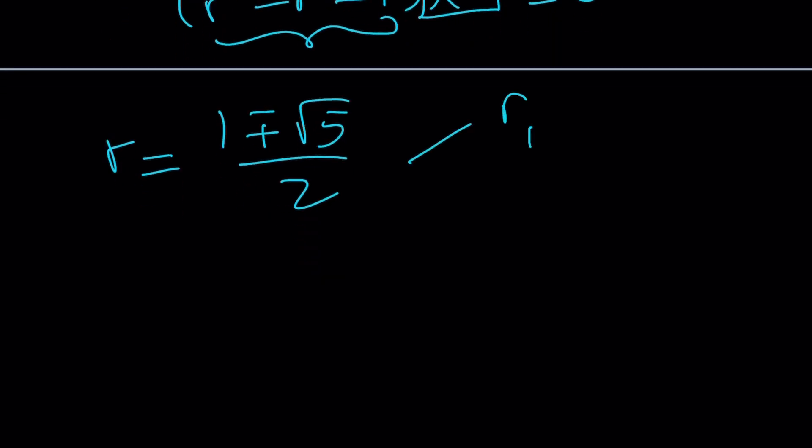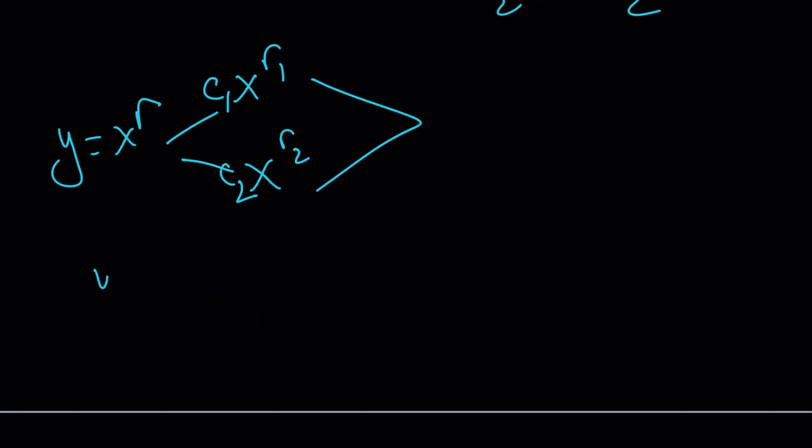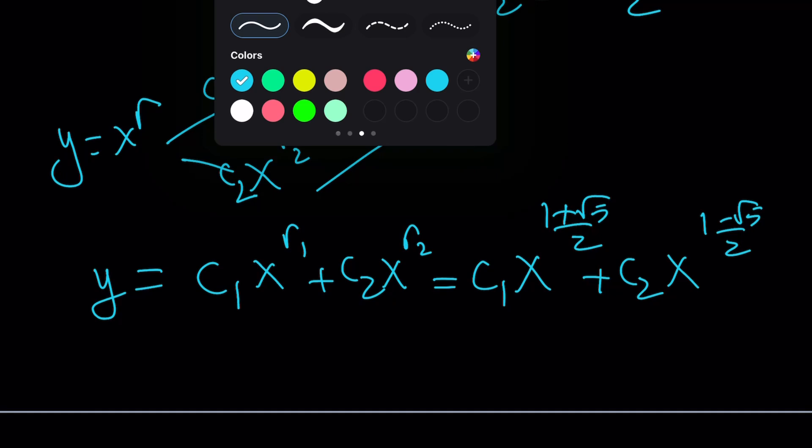So, if we can write these as r sub 1 and r sub 2, we can kind of write our expression like this. We said that y is equal to x to the r, and obviously, it could be x to the r 1 or x to the power r 2. But it also works with constants, like coefficients, because if you put a coefficient in front of it, it's still going to work. So, you can get a c sub 1 and c sub 2 and kind of put this together, and you're going to get the general solution. That's going to be c sub 1 x to the power r sub 1 plus c sub 2 x to the power r sub 2. And that can be written as c sub 1 x to the power 1 plus root 5 over 2 plus c sub 2 x to the power 1 minus root 5 over 2. So, that's going to be the general solution for our y value.